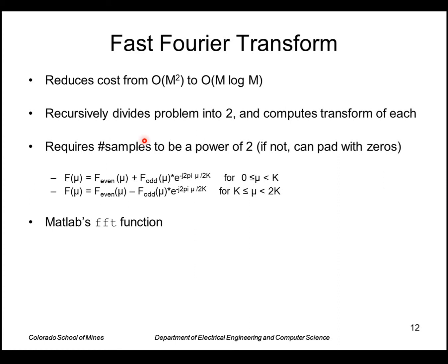It's based on the idea of dividing the problem into two recursively and computing the transform of each. So that reduces the cost from M squared, where M is the number of samples, to M log M. Quite a savings it can be. And MATLAB has a function to do that called FFT for fast Fourier transform.